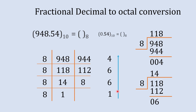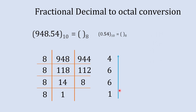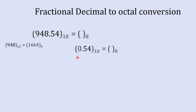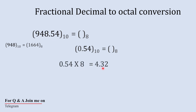We combine all the remainders and write this number from bottom to top to get the octal equivalent. So 948 is equal to 1664 in octal. Now it's time for the fractional number part. For the whole number part we divided by 8, whereas for the fraction number part we are going to multiply by 8. So 0.54 multiplied by 8 gives 4.32, and we take the whole number 4.